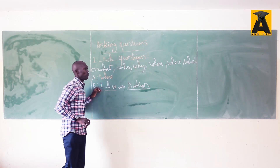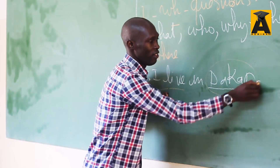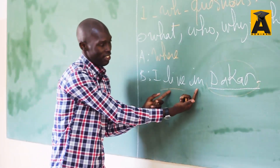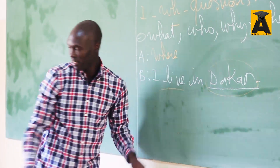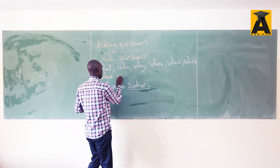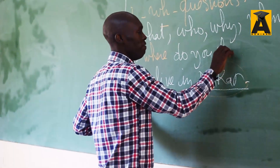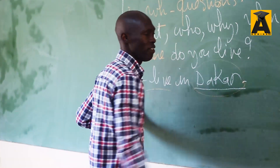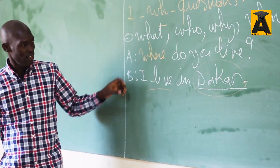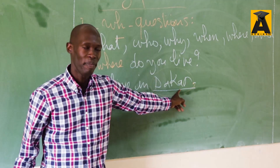So we use 'where' for a question concerning a place. And since the sentence is in simple present, you're going to have: 'Where do you live?' — with a question mark. Where is used to ask questions about place.